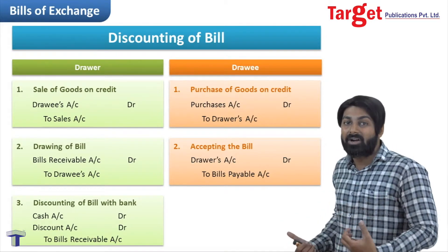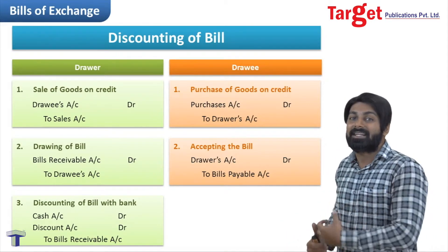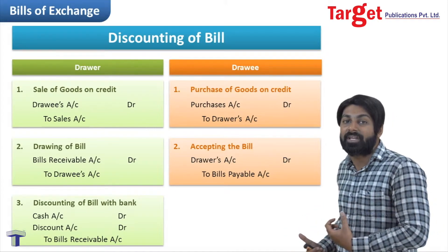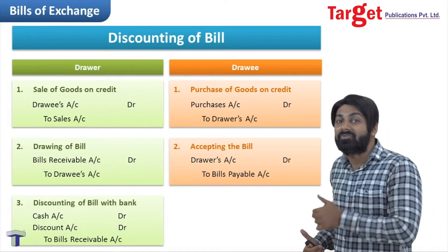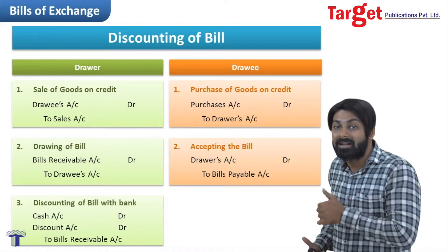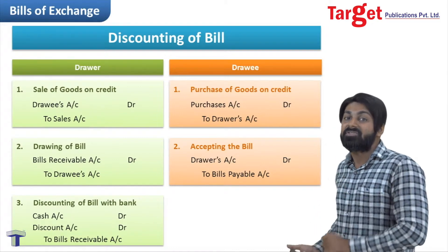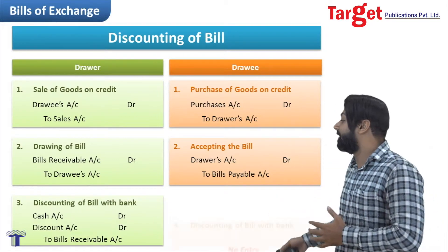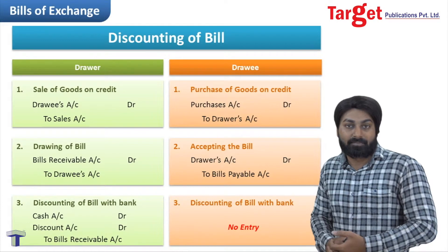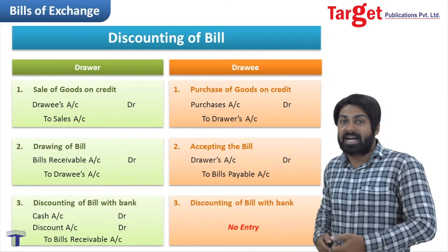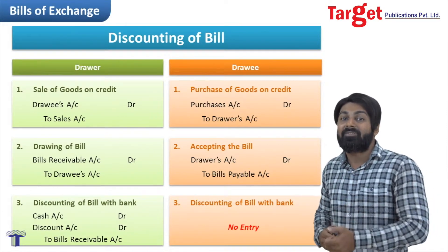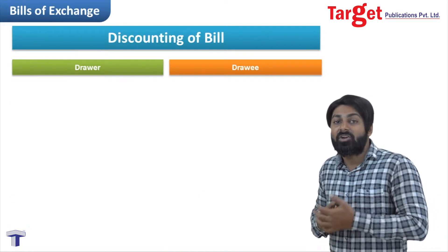Will there be any entry in the books of the drawee at this stage? No. Why not? Because there is no transaction happening involving the drawee. The transaction was between the drawer and the bank. Since the drawee is not involved in the transaction, there will be no entry in the books of the drawee.